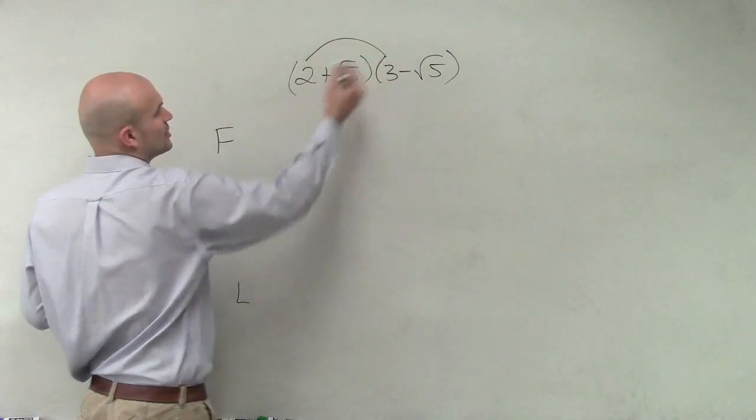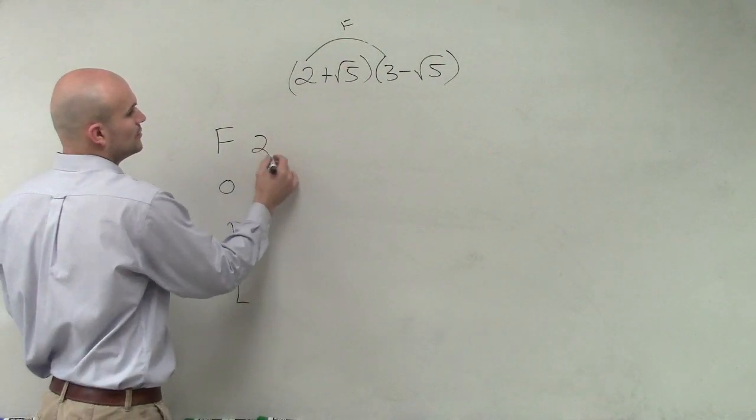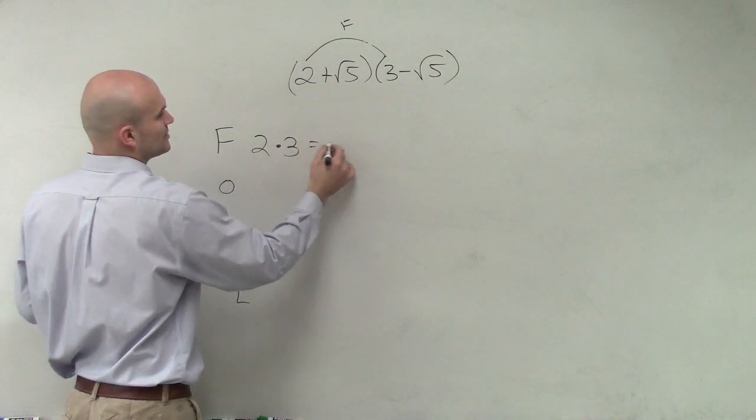So the first means the first two terms in your binomials go to the first. So we have 2 times 3, which equals 6.